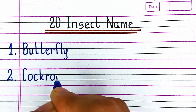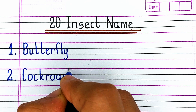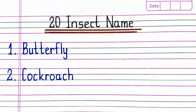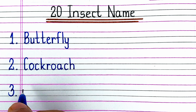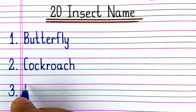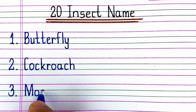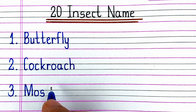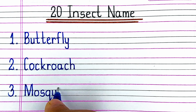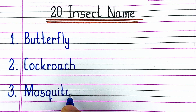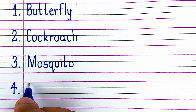Next is C-O-C-K-R-O-A-C-H, Cockroach. Next is M-O-S-Q-U-I-T-O, Mosquito.